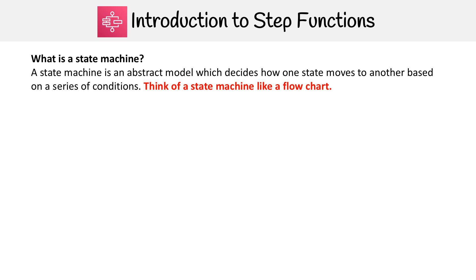The first thing we need to know before understanding Step Functions is what a state machine is. A state machine is an abstract model which decides how one state moves to another based on a series of conditions. Think of a state machine like a flowchart, because that's exactly what it is and what it looks like.